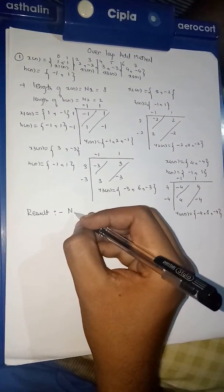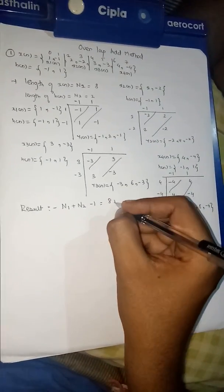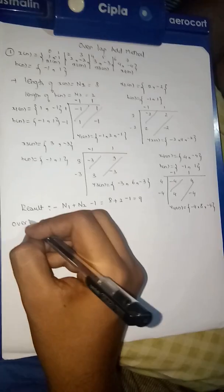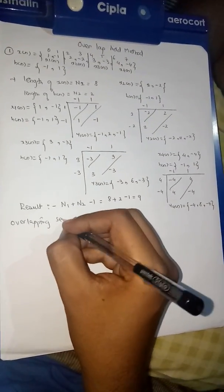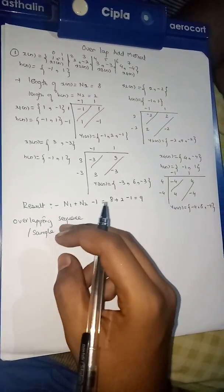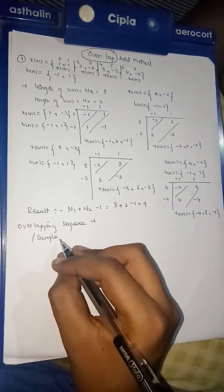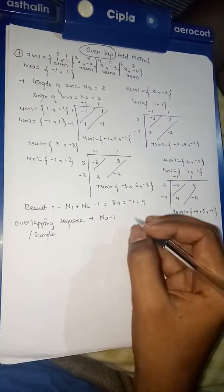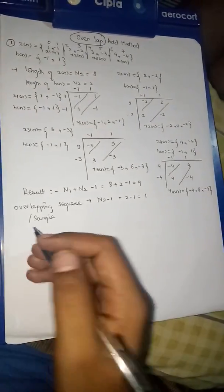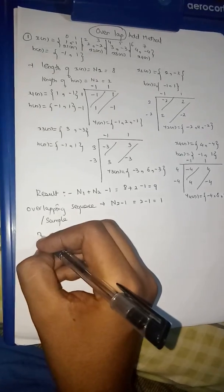The resultant length is given by the formula N1 + N2 - 1, so 8 + 2 - 1 = 9. To find the overlapping sequence, we use the formula N2 - 1, which gives 2 - 1 = 1. So we have one overlapping sample — that is why it is called the overlap-add method.